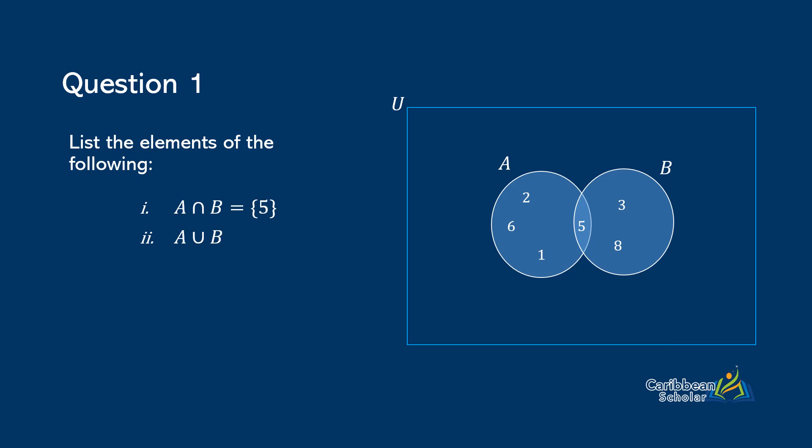And for part two we're looking for A union B. So we want all of the numbers that are in A or B and we want to list them only one time. So we have two, six, one from A and five from the overlap and then three and eight from B.